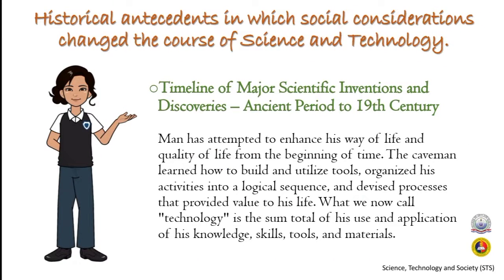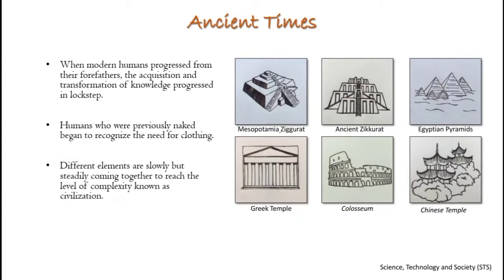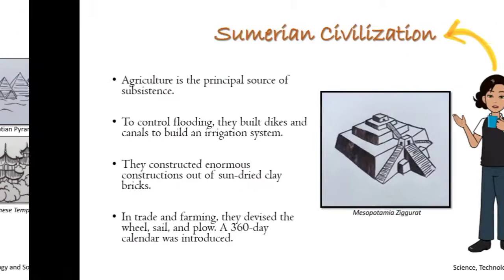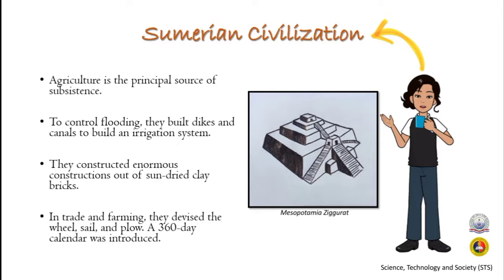In a timeline of major scientific inventions and discoveries from ancient times, as modern humans progressed, the acquisition and transformation of knowledge advanced in lockstep. Agriculture became the principal source of subsistence for Sumerian civilization. To control flooding, they built dikes and canals for irrigation. They constructed enormous structures out of sun-dried clay bricks, and in trade and farming, they devised the wheel, sail, and plow. A 360-day calendar was also introduced.